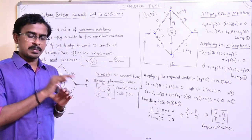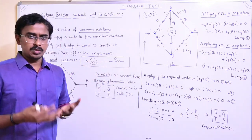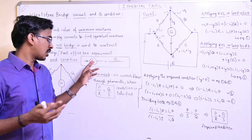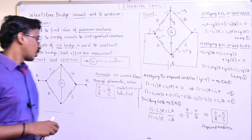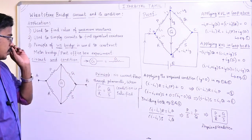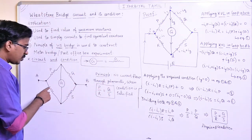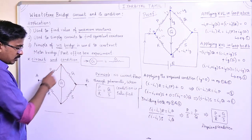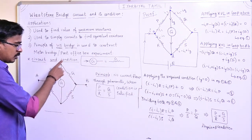The galvanometer is used to detect the presence of current. It also acts as a resistor with resistance G. In the construction, we will prove that there will be a resistance of G at the galvanometer. The Wheatstone Bridge uses resistors, and the circuit has a diamond shape.